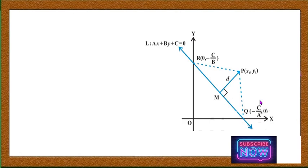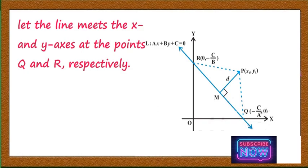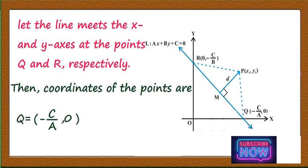The line will intersect the x-axis at Q and the y-axis at R. The x-intercept of ax + by + c = 0 is −c/a, so the coordinate of Q is (−c/a, 0), and the y-intercept is −c/b, so the coordinate of R is (0, −c/b). Thus the coordinates are: Q = (−c/a, 0), R = (0, −c/b), and P = (x1, y1).